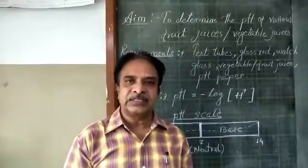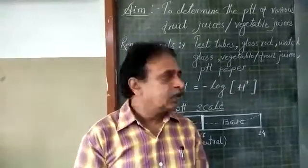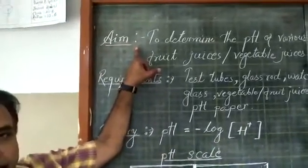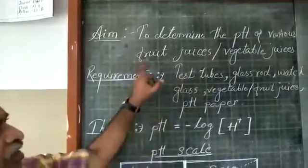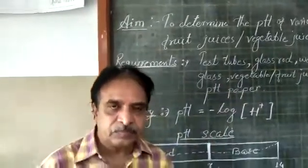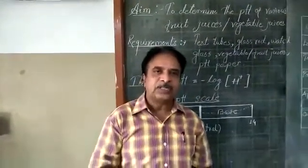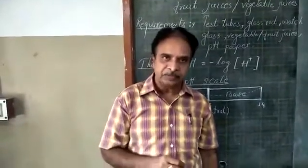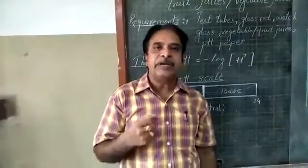Our today's experiment is one of the short experiments of Class 11th practicals based on pH. The aim of our today's practical is to determine the pH of various fruit juices or vegetable juices. The question is: are naturally available fruits or vegetables slightly acidic or basic in nature? These weak acids or bases help in maintaining good health.